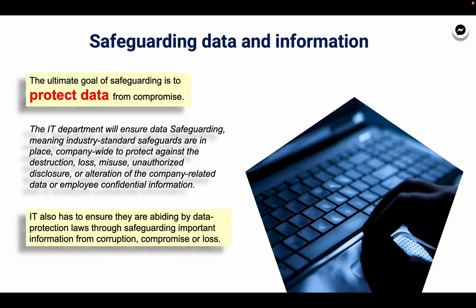Safeguarding Data and Information. The ultimate goal of safeguarding is to protect data from compromise. The IT department will ensure data safeguarding, meaning industry standard safeguards are in place company-wide to protect against the destruction, loss, misuse, unauthorized disclosure, or alteration of company-related data or employee confidential information. IT also has to ensure they are abiding by data protection laws through safeguarding important information from corruption, compromise, or loss.